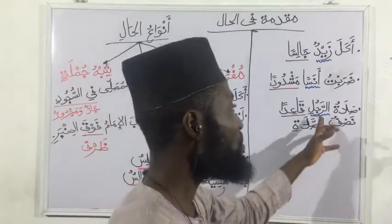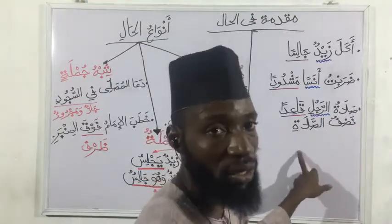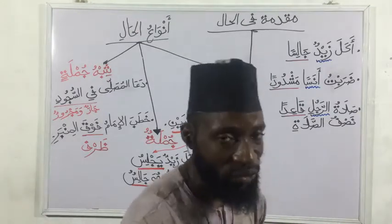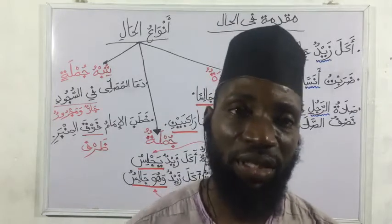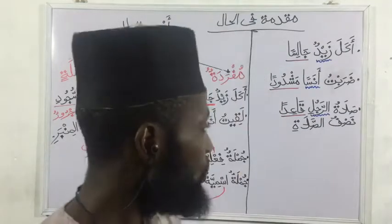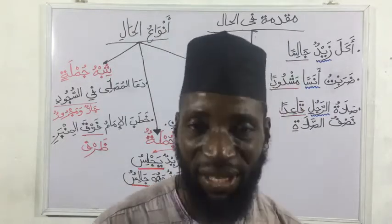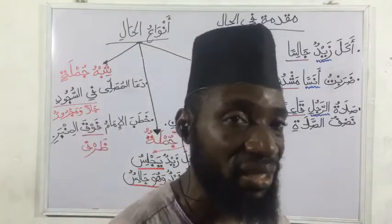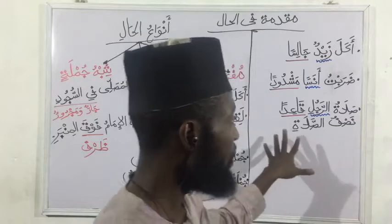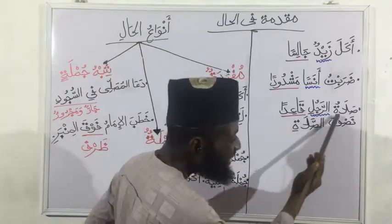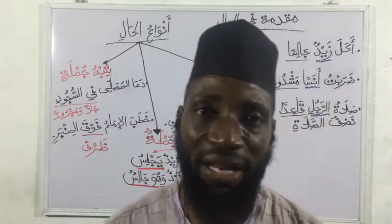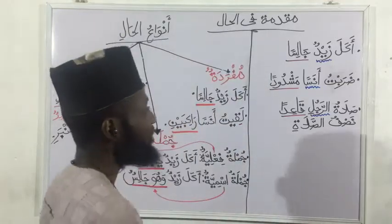Another example from the hadith of the Prophet sallallahu alayhi wa sallam: Salatu al-Rajuli Qa'idan Nisfus-Salah — the prayer of a man while he is sitting is half the reward. Here 'Qa'idan' is the Hal, describing the state of the man while performing Salat. It is from 'Qa'ada' meaning to sit. This is what we call the Hal.